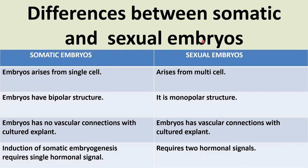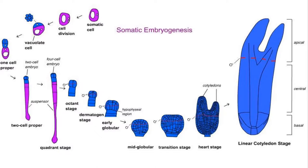Differences between somatic and sexual embryos: somatic embryos arise from a single cell, whereas sexual embryos arise from multiple cells. Somatic embryos have a bipolar structure, whereas sexual embryos have a monopolar structure. Somatic embryos have no vascular connection with the cultured explant, whereas sexual embryos have a vascular connection. Induction of somatic embryos requires a single hormone signal, whereas sexual embryos require two hormonal signals.